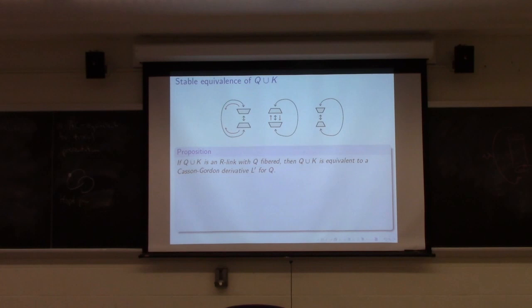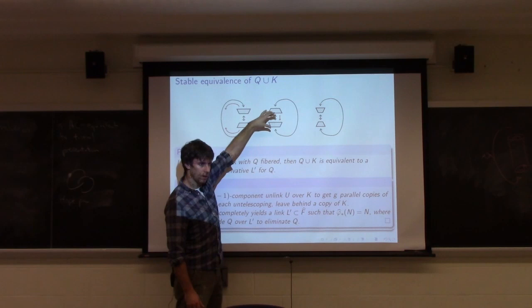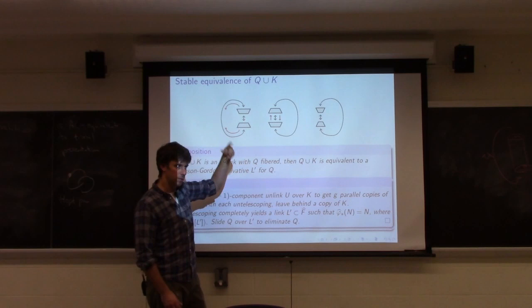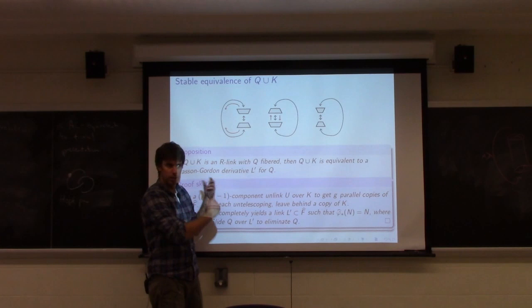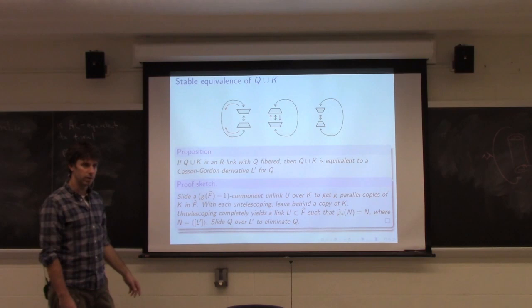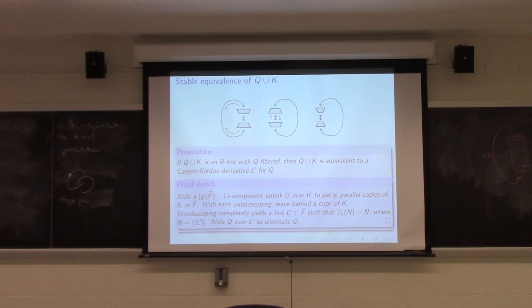The outline of step one: keep unwrapping. I embed some unlink around handles, and whenever I pass one around the circle I leave behind a trail — one unknot from an unlink component each time. At the end, after careful bookkeeping with the monodromy, that trail of breadcrumbs is in fact a Casson-Gordon derivative.